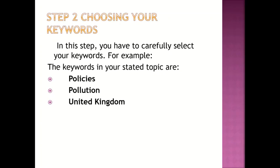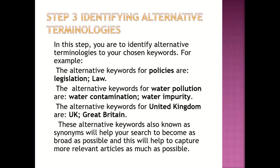In the keyword selection step, you carefully select your keywords from your topic. Then in the third step, you identify alternative terminologies to your chosen keywords. For example, the alternative keywords for 'policies' are 'legislation' and 'law.' The alternative keywords for 'water pollution' are 'water contamination' and 'water impurity.' The alternative keywords for 'United Kingdom' are 'UK' and 'Great Britain.'